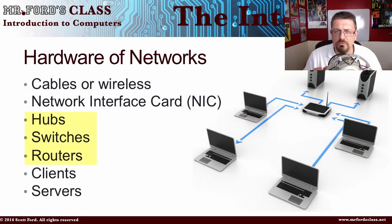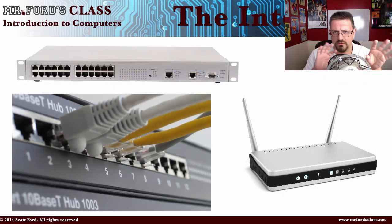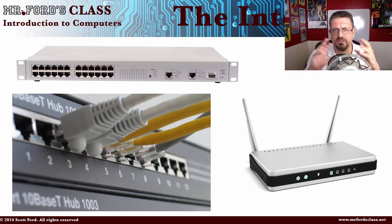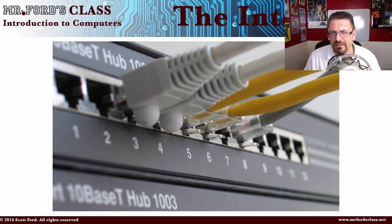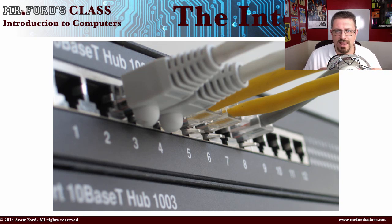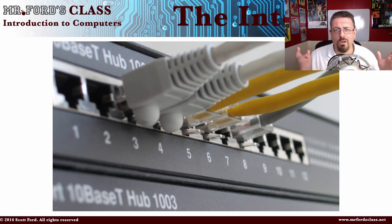You have hubs, switches, and routers. They are kind of in the same family, but they are different groupings — they have the same general purpose, which is to connect devices to a central location. Hubs are what we call dumb devices; a hub is something that just repeats information. You might also hear them called repeaters. These are older devices from the early days of networking. A signal would come in and the hub would just yell it out to everybody.